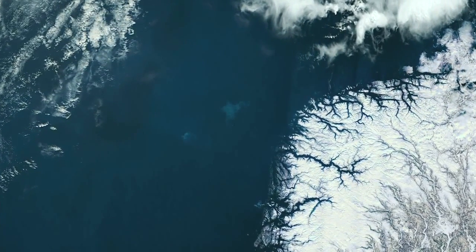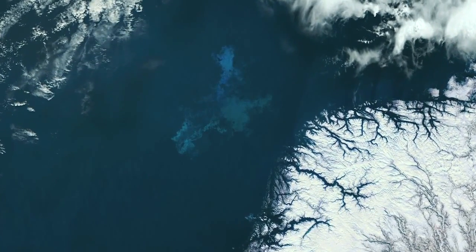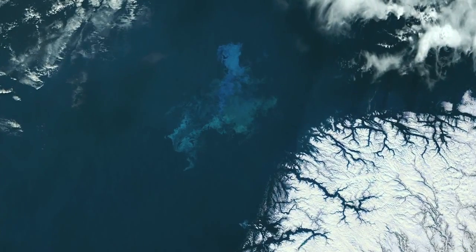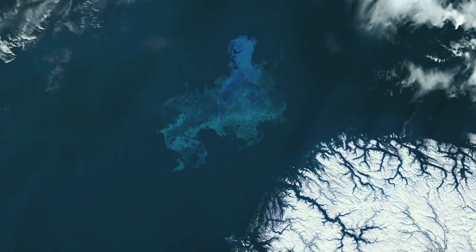When the sun is strong and the currents mount to the surface, an astonishing phenomenon occurs, so gigantic that it is visible from space. A blooming, an explosion of life.